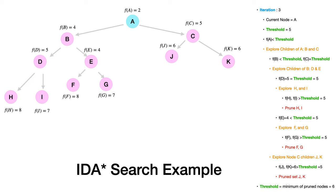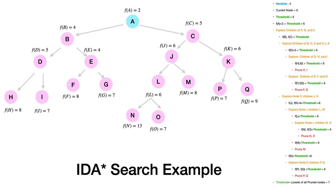Among the pruned nodes, the lowest F(n) value is F(J) = F(K) = 6, so that becomes the threshold for iteration 4. Starting again from node A, we traverse through until nodes H, I, F, and G — all have F(n) greater than threshold, so they're not pursued. Node C's child J has F(J) = 6, equal to the threshold, so we pursue it and find children L and M with F values 6 and 8.